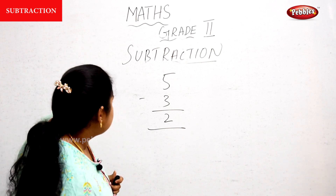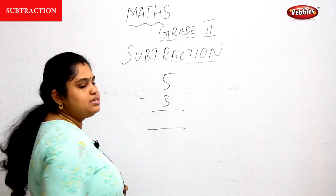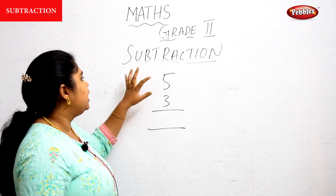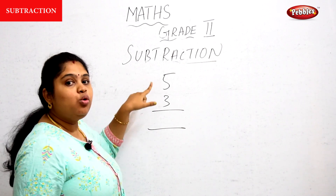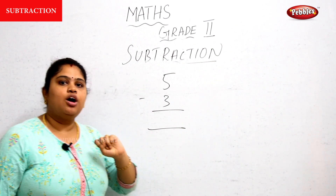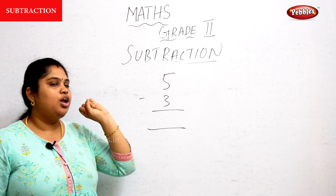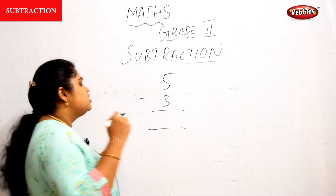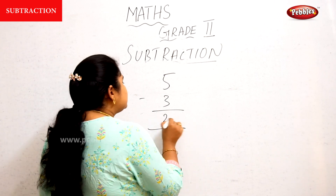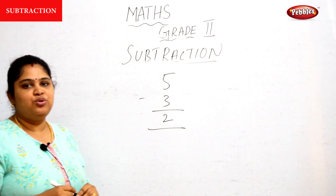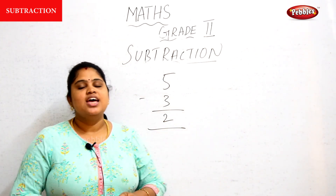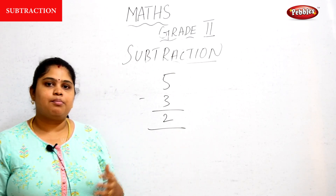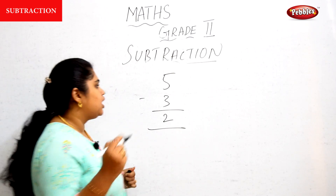Now you are more grown up. So how are you going to find it out? For five minus three, you need backward counting from five. So: four, three — you got two as the answer. A mature person performs subtraction using backward counting like this.